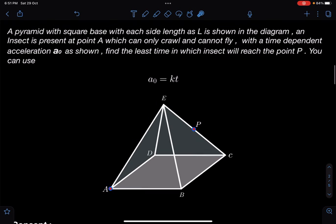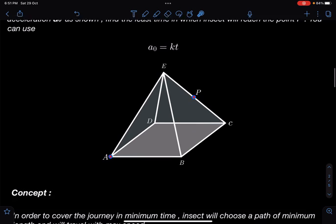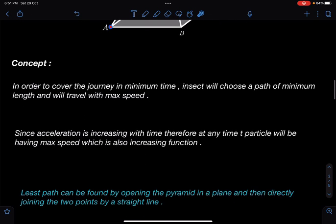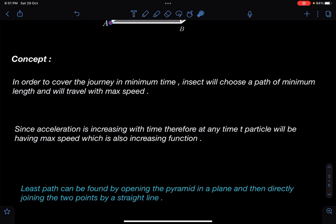I have done this kind of problem earlier on the channel, so I was expecting more students would solve it correctly. Concept wise, let's discuss: In order to cover the journey in minimum time, the insect will choose a path of minimum length and will travel with the maximum possible speed. Since acceleration is increasing with time because it is given as kt, speed will keep on increasing. So at any given instant it will be traveling at maximum speed at that particular instant.